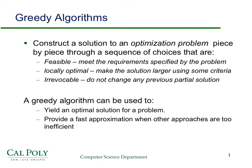A greedy algorithm is an algorithm that constructs the solution to an optimization problem piece by piece, basically one step at a time. Going through a sequence of choices where each choice is feasible — meaning it meets the requirements specified by the problem — and it's locally optimal, meaning it makes the solution larger using some criteria that fits with the criteria you're trying to achieve in the optimization problem.